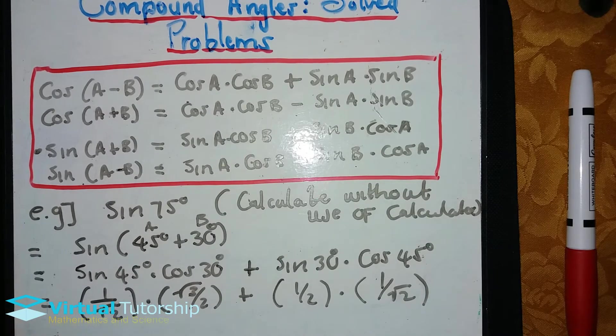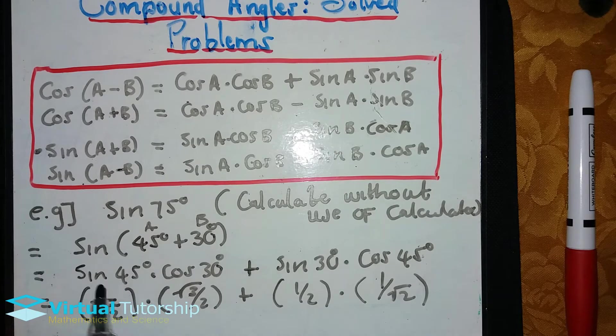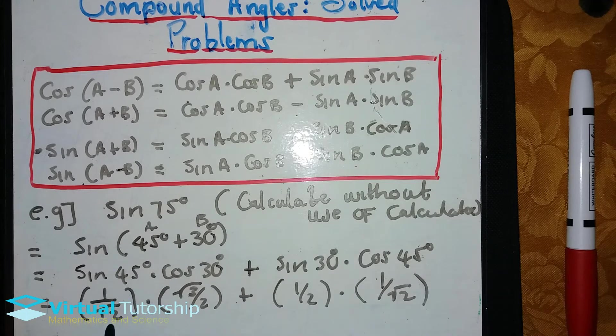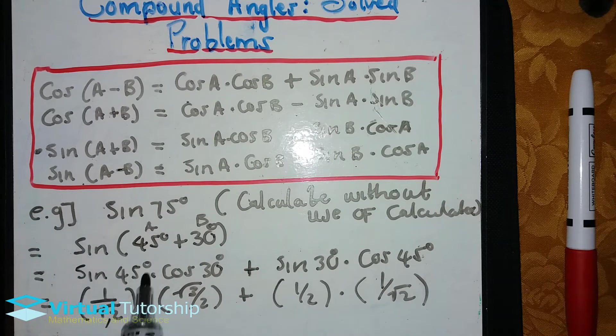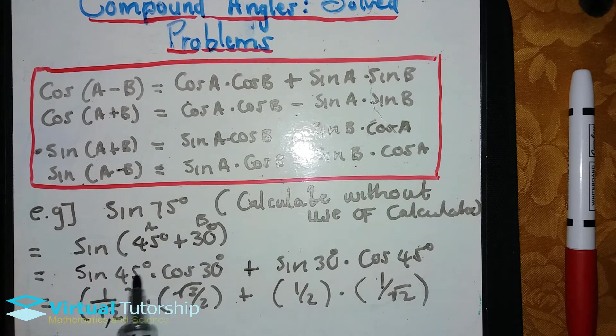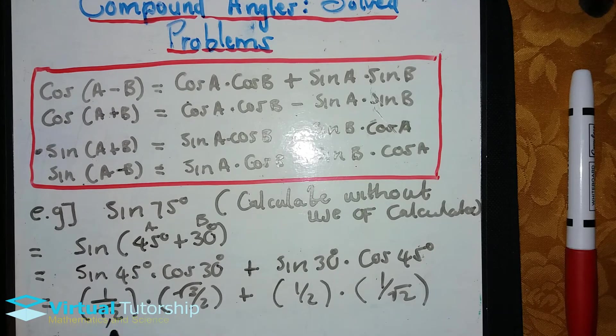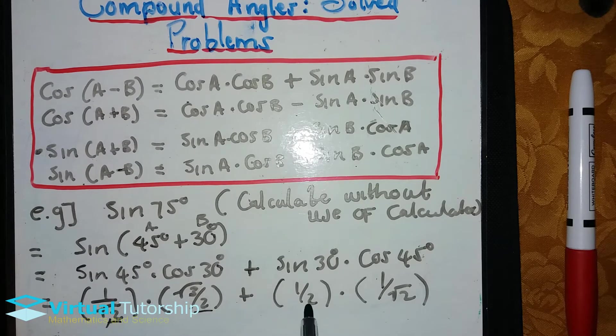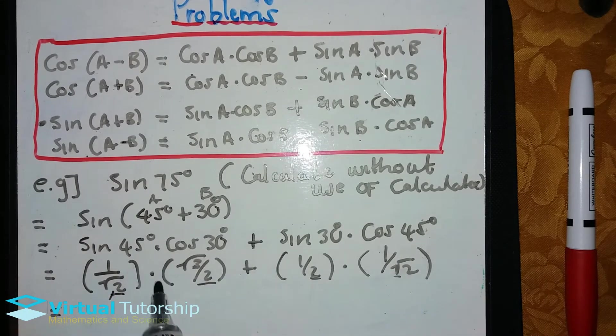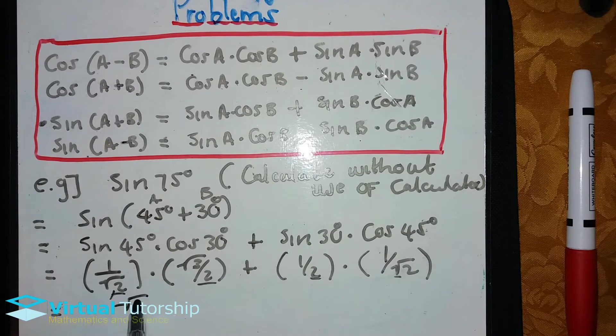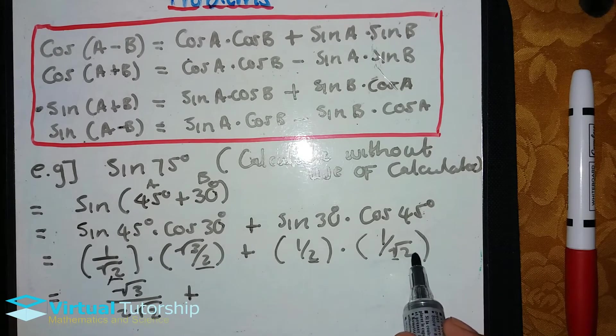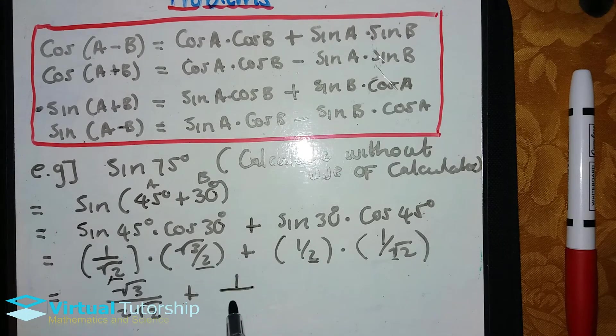After all, we remember the value of this without the use of a calculator. So we don't need to calculate here; we only need to learn the trigonometric ratios. Now let's simplify it further. Now multiply this fraction: one over square root two times square root three over two equals square root three over two square root two.